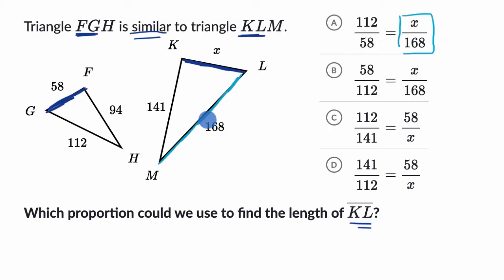So X over 168. So that should be the same ratio as, and let's see, 168 is the longest side of this triangle. So that should correspond to this one right over here. So X over 168 should be the same thing as 58 over 112. That is not what they wrote. They wrote 112 over 58. So I am going to rule this one out.